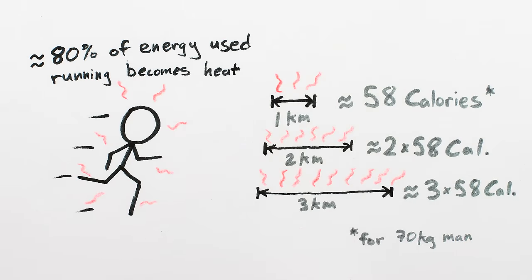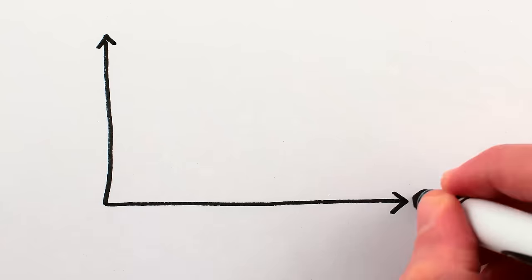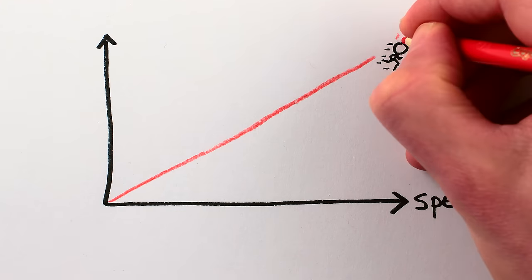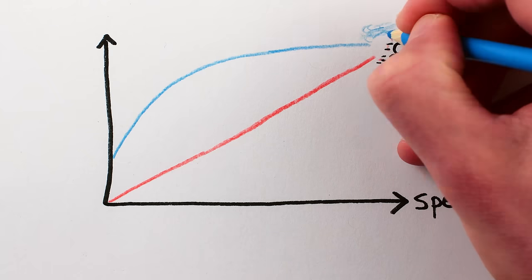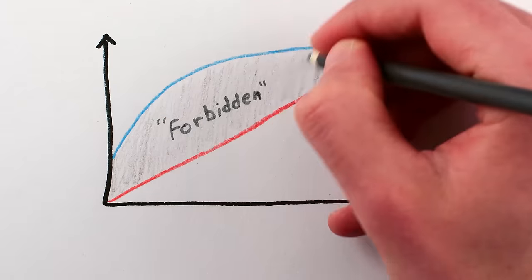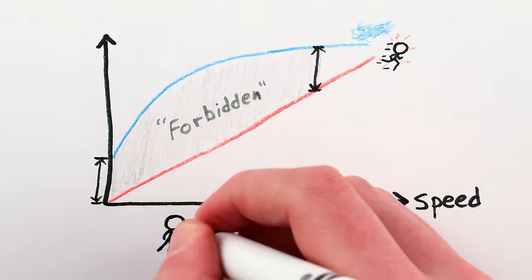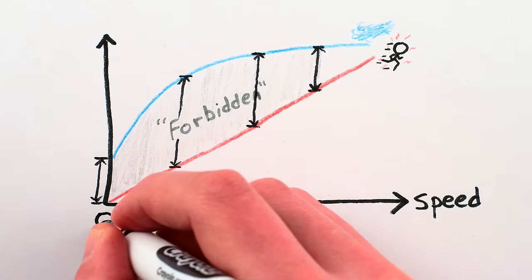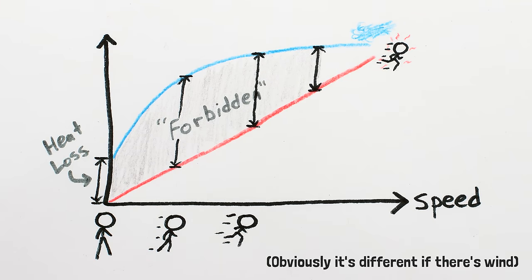Because the heat generated by running has a steady increase while your protective layer of warm air goes away quickly at low speeds, it turns out that there's a kind of forbidden range of speeds where it's not worth walking, or even running slowly, since you'd lose less heat standing still.